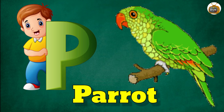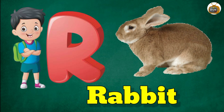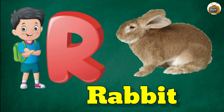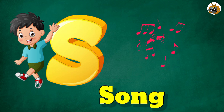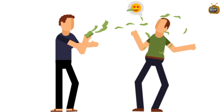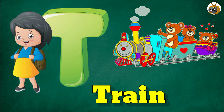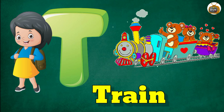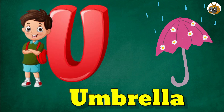Q for queen, R for rabbit, S for song, T for train, U for umbrella.